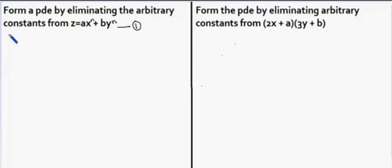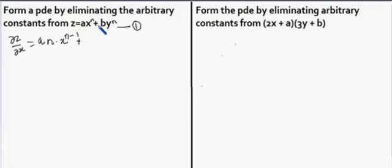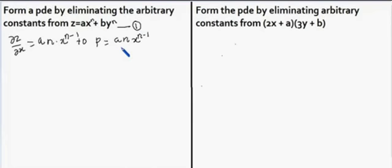Procedurally, we shall differentiate equation number 1 with respect to x. That is, dz/dx is equal to a is a constant and the differentiation of x^n is n·x^(n-1). The differentiation of the next term is 0 because b is a constant and y^n is also a constant with respect to x. So dz/dx, written as p, is equal to a·n·x^(n-1).